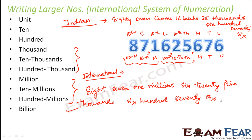There is quite a difference between the name of the same number in the Indian system versus the international system. What we call eighty-seven crores, sixteen lakhs, twenty-five thousand, six hundred seventy-six in the Indian system is the same as eight hundred seventy-one million, six hundred twenty-five thousand, six hundred seventy-six in the international system.